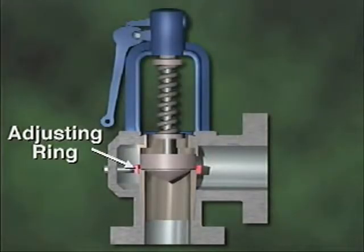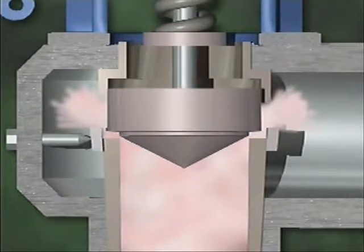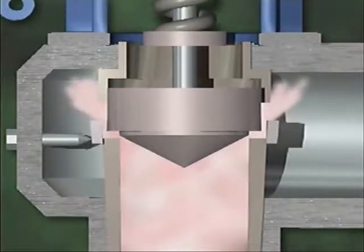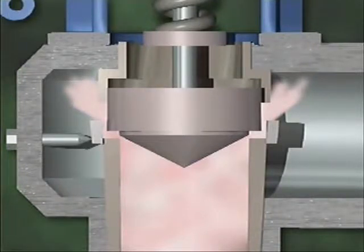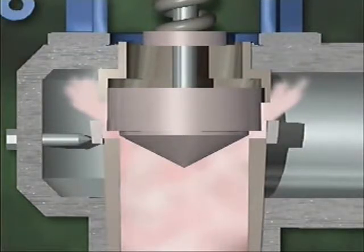Blowdown can be adjusted by changing the setting of the valve's adjusting ring. The position of the disc in a safety valve is determined by the amount of system pressure and the angle and velocity of the steam striking the disc. When the adjusting ring is in the raised position, the escaping steam is directed right at the disc. The velocity of the escaping steam exerts a great deal of upward force because most of the steam strikes the disc closer to a 90-degree angle. The system pressure must therefore drop well below the popping pressure before the spring can force the disc back onto its seat, so raising the adjusting ring increases the blowdown of the valve.